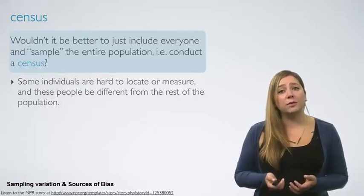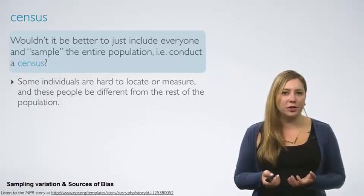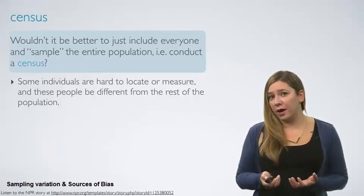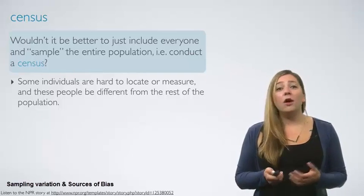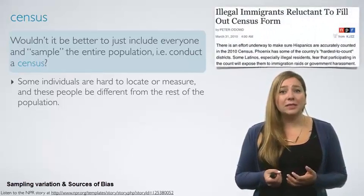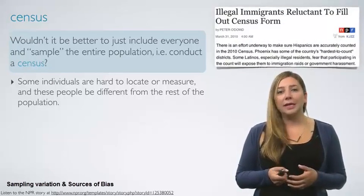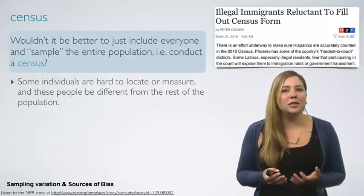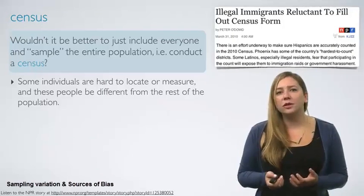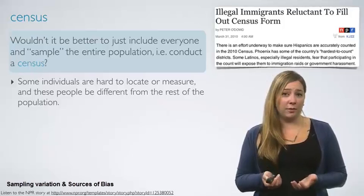First, some individuals may be hard to locate or hard to measure, and these people may be different from the rest of the population. For example, in the US Census, illegal immigrants are often not recorded properly, since they tend to be reluctant to fill out census forms with the concern that this information could be shared with immigration.